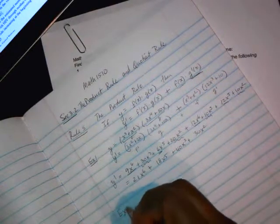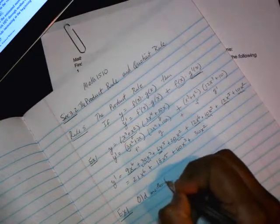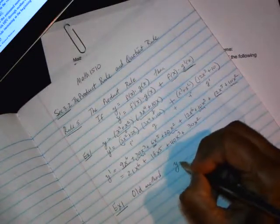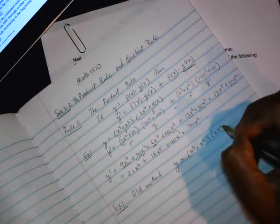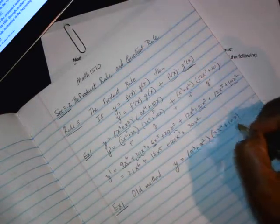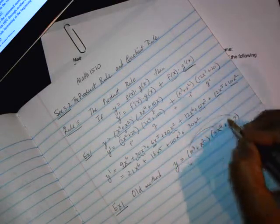Now, where I'm going with this is we're going to do the same example by the old method. Old meaning from the last section where you take y and you have the product but you can't take the derivative as is. Rather, you would rewrite. So you would multiply first to do the FOIL.